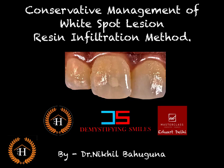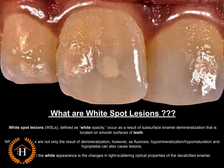Today's effort is to discuss a conservative management of white spot lesion by resin infiltration. Before we start how to manage it, let us have a look at what these white spot lesions are. These white opaque lesions on the tooth are a result of subsurface enamel demineralization located on the smooth surfaces of teeth. They are not only a result of demineralization but also of fluorosis, hypomineralization, hypomaturation, and hypoplasia.